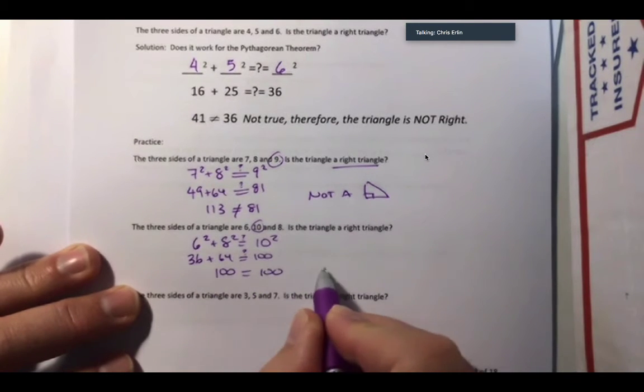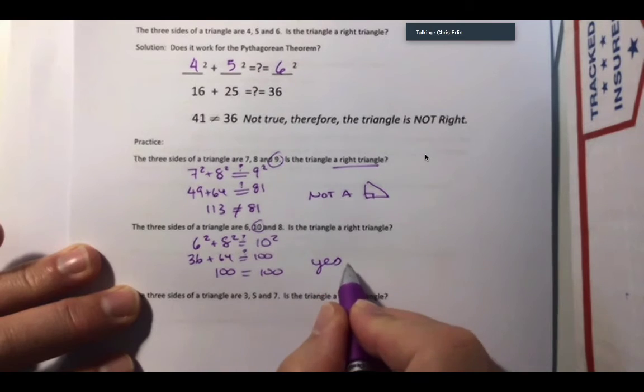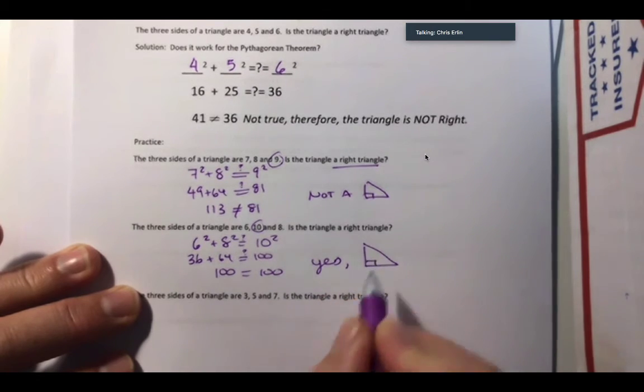is equal to 100. Ah, 100 is equal to 100. Therefore, yes, it is a right triangle.